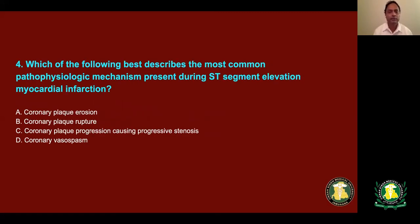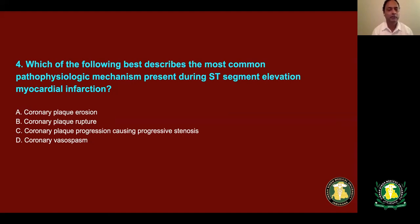Which of the following best describes the most common pathophysiologic mechanism during ST elevation myocardial infarction? Options: A — coronary plaque erosion; B — coronary plaque rupture; C — coronary plaque progression causing progressive stenosis; D — coronary vasospasm. The answer is B — coronary plaque rupture. This is the most common mechanism and usually occurs in patients above age 40. Patients below age 40 presenting with myocardial infarction usually have coronary plaque erosion, and patients above age 70 usually have coronary plaque progression with progressive stenosis. Coronary vasospasm is the mechanism in Prinzmetal angina.